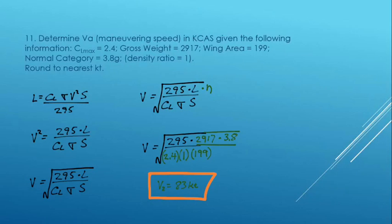So the weight is really, the lift generated by the wing is really 3.8 times 2,917. What speed will it stall if it has a CL max, coefficient of lift max, which equates to the angle of attack at which this wing will stall of 2.4? If you have a wing area of 199 and assuming density ratio of 1, which is sea level, VA is going to be 83 knots on this airplane.